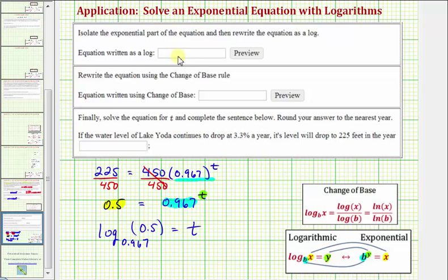To enter this online, you do want to use the equation tool by clicking in the answer box, and then clicking the small yellow arrow that will appear to the right. We want to enter log base 0.967 of 0.5 equals t.